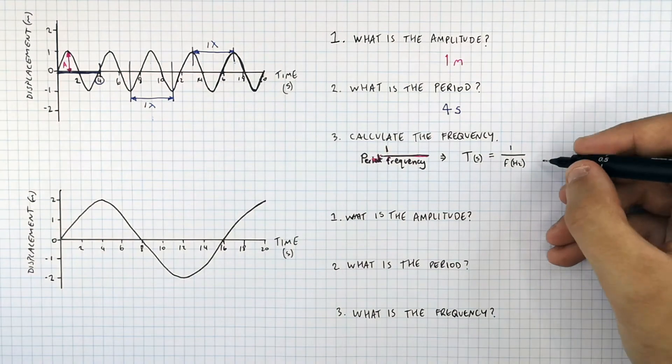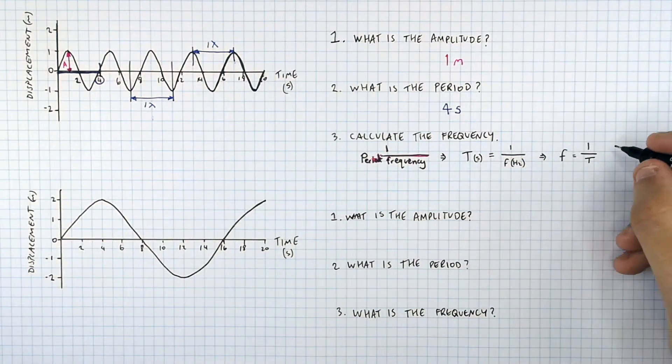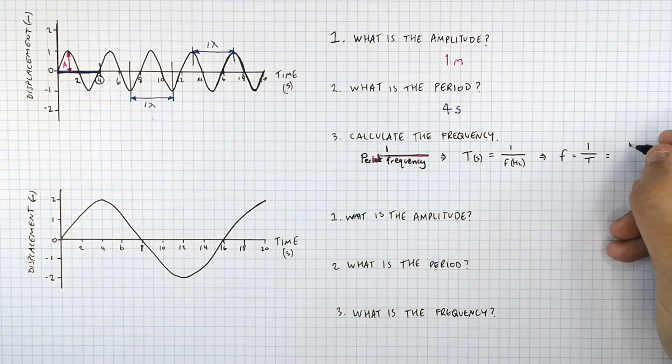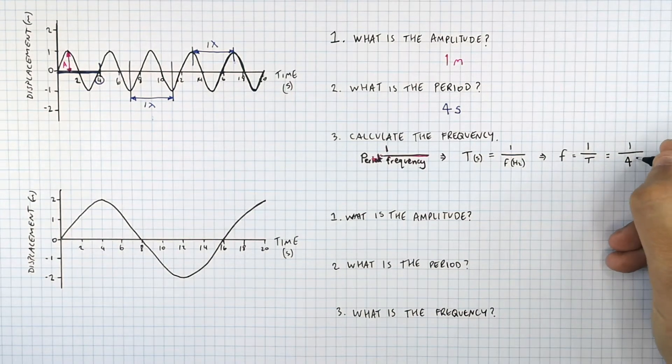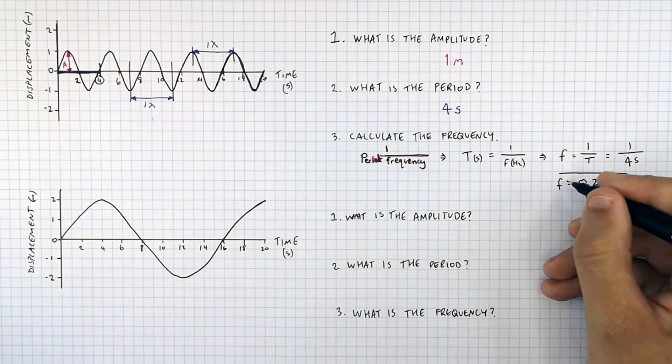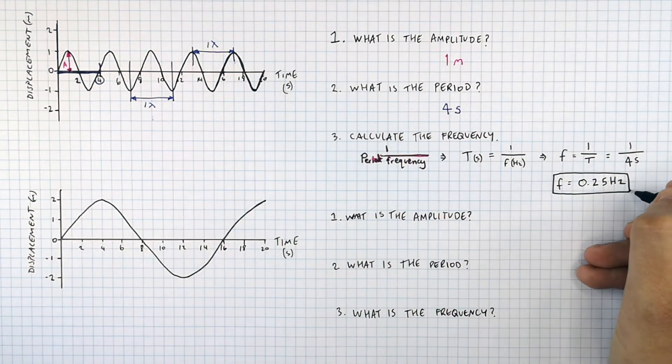We need to rearrange for F. So F equals one over T, so that means it's going to be one over the period, four seconds. So the frequency is one over four, which is a frequency of 0.25 hertz.